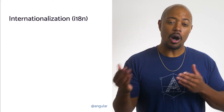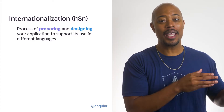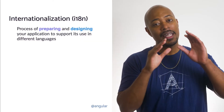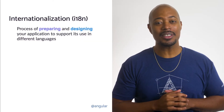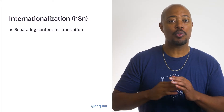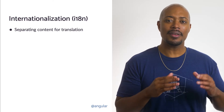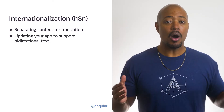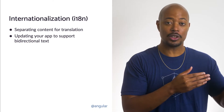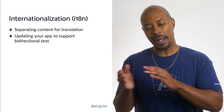Internationalization, often abbreviated as i18n, is the process of preparing and designing your app to support its use in different languages and language dialects. This could include enabling your application to support rendering in different languages by separating the content that will then be translated. Also, the preparation could include updating your app to support bi-directional text — that is, left-to-right or right-to-left.